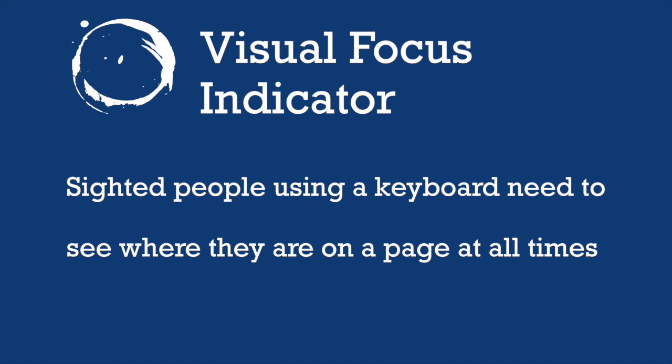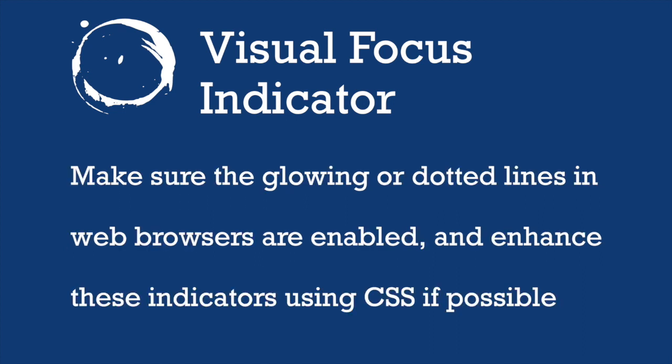People using a keyboard need to see where they are on a page at all times — this is called a visual focus indicator. It lets people know where they are on a page when using a keyboard, usually displayed as a glowing or dotted line around the part of the page currently in focus. Make sure these indicators are enabled in web browsers, and enhance them using CSS if possible. The better the visual focus indicator works, the easier it will be to navigate your web page.